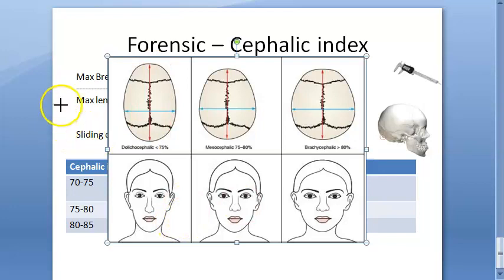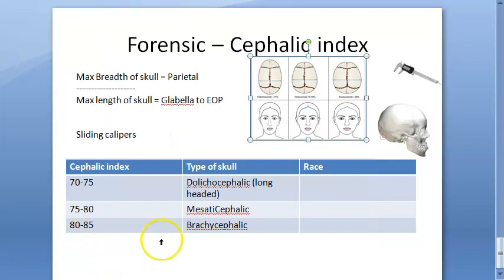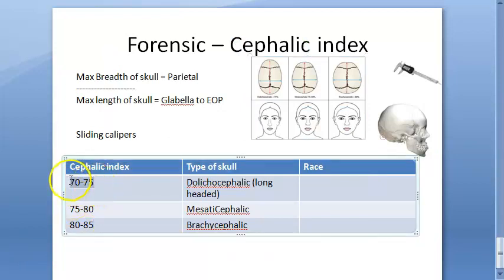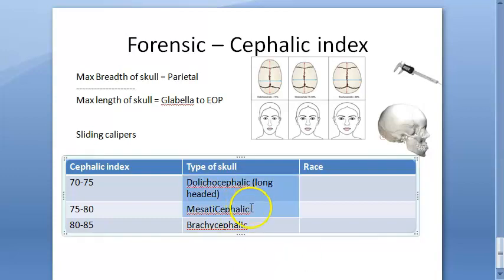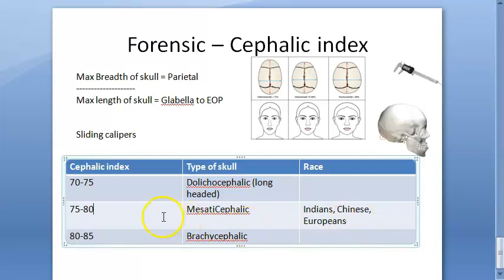Something you may get confused about: the index is less — 70 to 75 — but it is long-headed, whereas 80 to 85 has a higher index but is short-headed. The Indian skull is actually mesocephalic, but it has some dolicocephalic features as well. It is a mixture, described in the textbook as caucasoid with negroid features. So Indians, Chinese, and Europeans are classified as mesaticephalic.